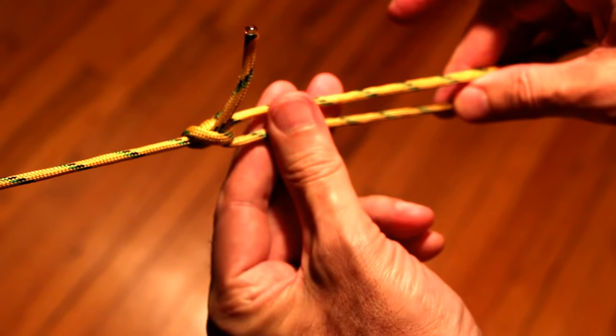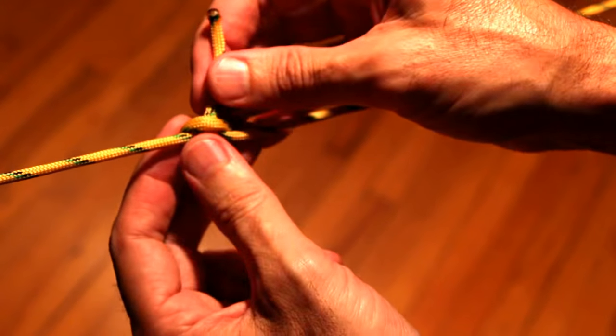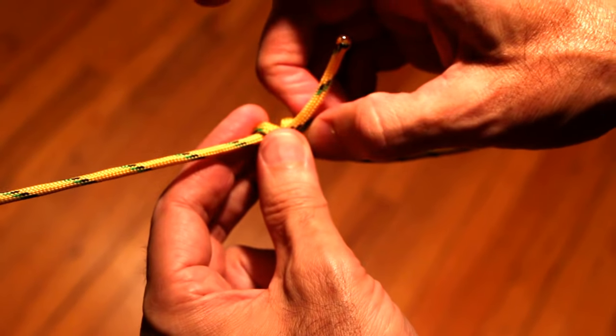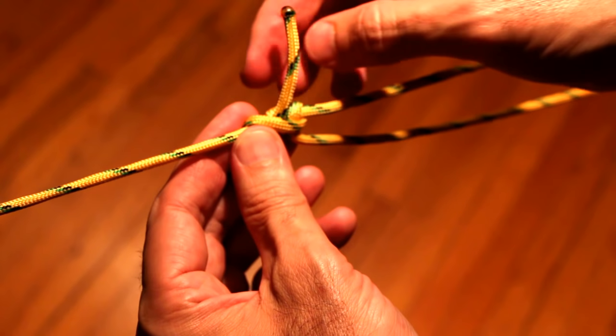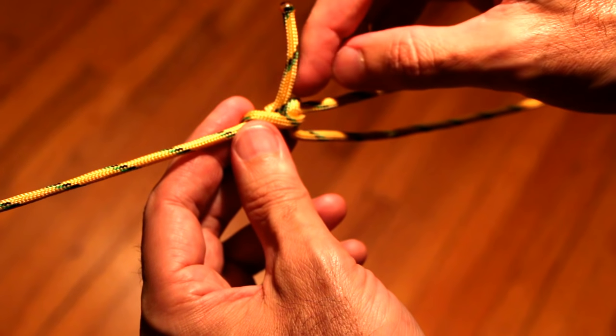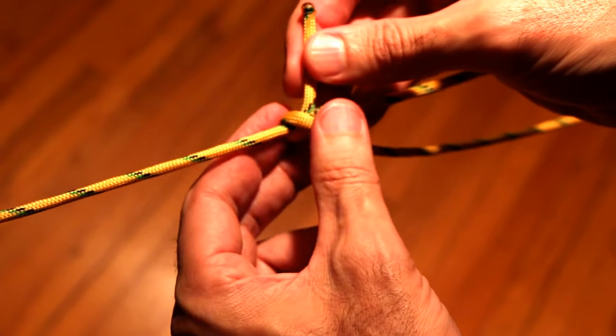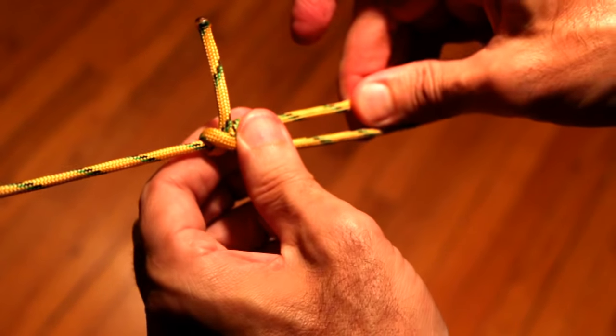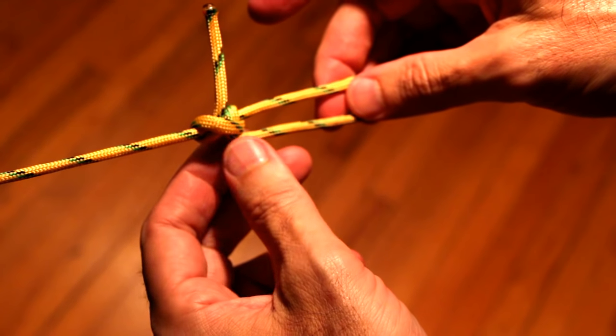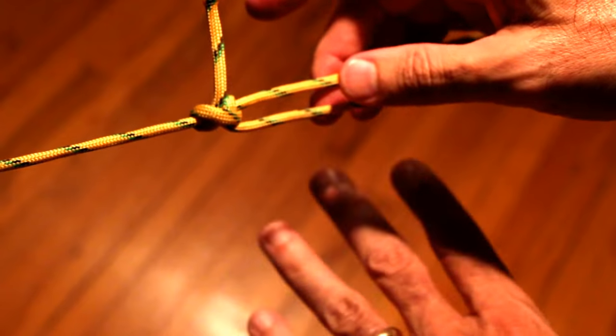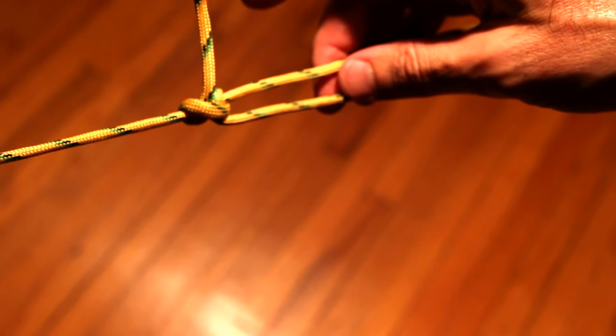Tighten it down a bit, cinch it up and there you are, that's your typical taut line hitch. It's a rolling hitch if instead of putting your two loops in side by side, you cross over, take this second loop and cross over the first, that makes a rolling hitch.